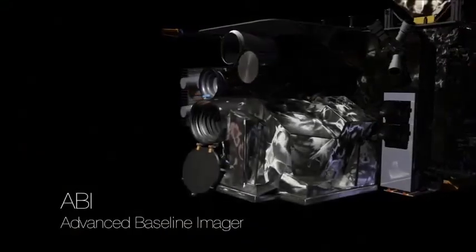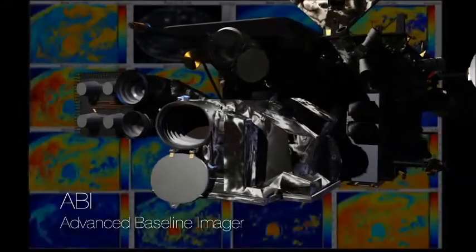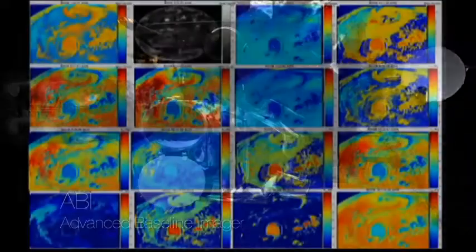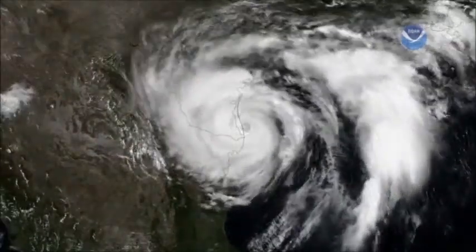The advanced baseline imager will provide over 80% of all the mission data, and it will offer high-resolution visible light and infrared cloud imagery to observe and monitor the development and track of tropical storms.